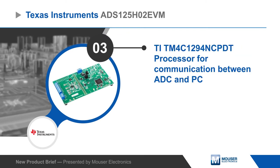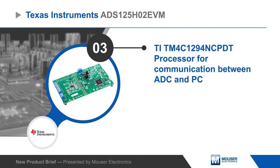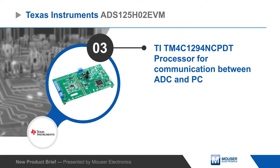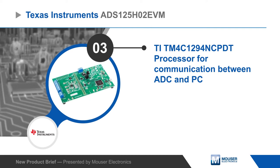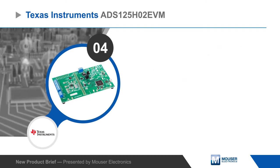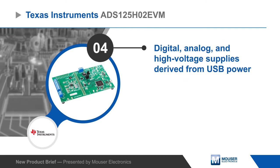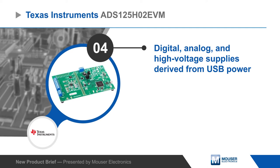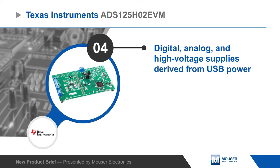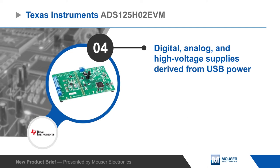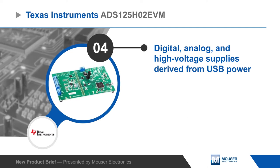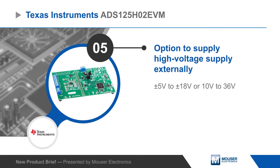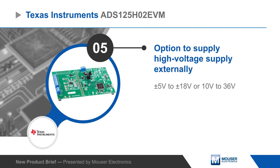A TI processor is used to communicate with the ADC over SPI and the host PC over USB. On-board regulators and LDOs are used to derive analog, digital, and plus or minus 15 volt rails from USB power. A high voltage rail can also be supplied externally.